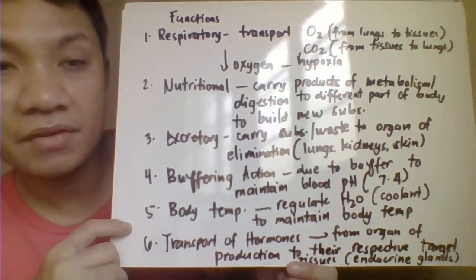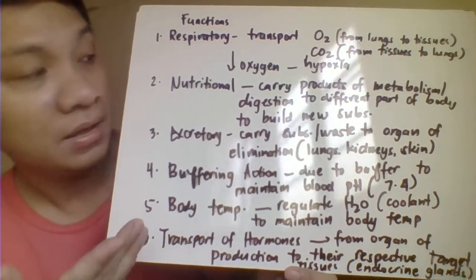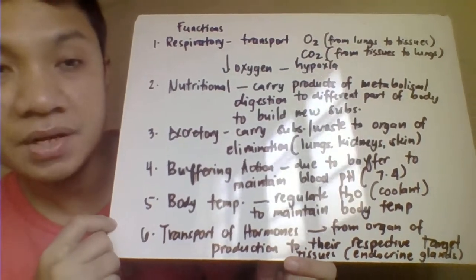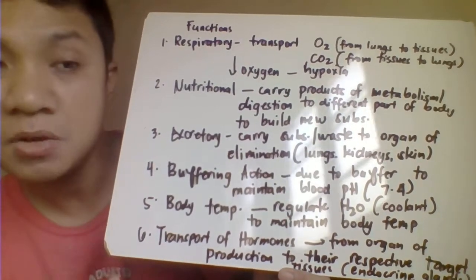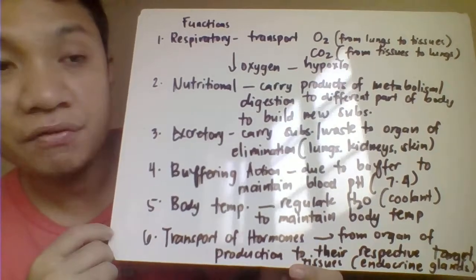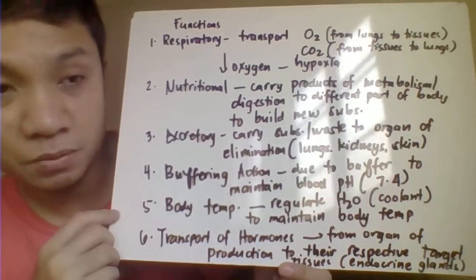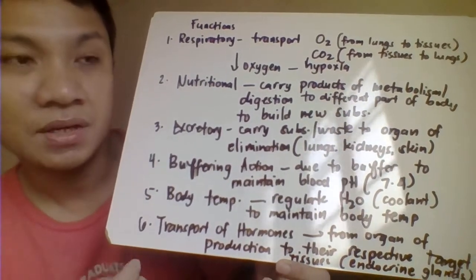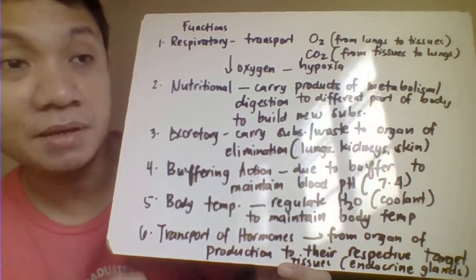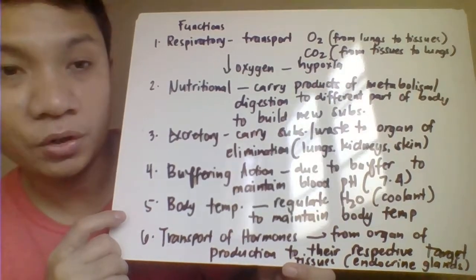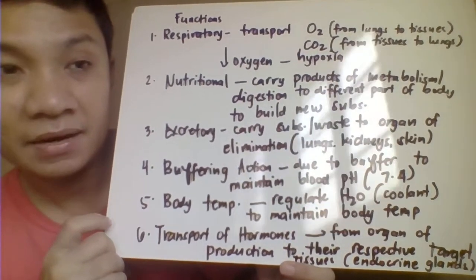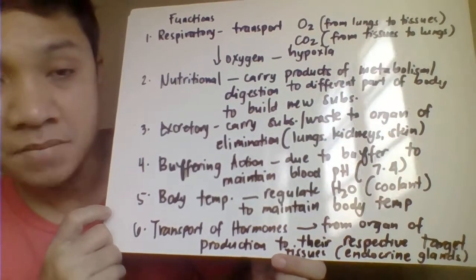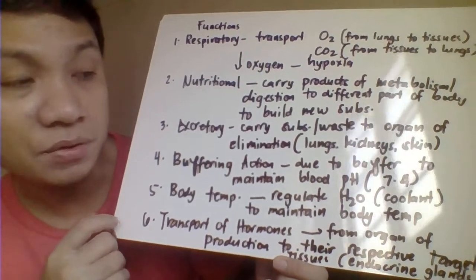The second function is the nutritional function. Blood delivers the byproducts of digestion to different parts of the body — most likely to the liver, where most molecules are produced through metabolic byproducts. The third function is the excretory function. Blood can also deliver waste products and toxins to the organs of elimination: the lungs, liver, kidneys, and even the skin.